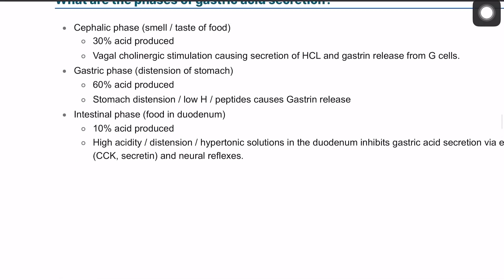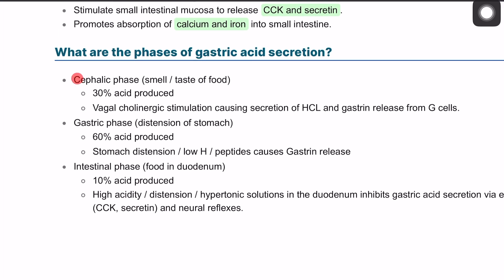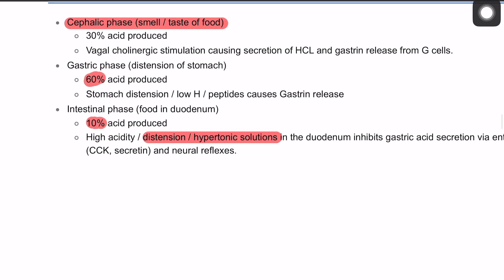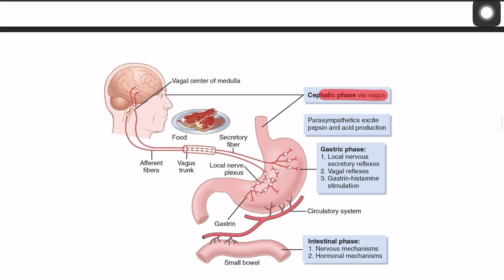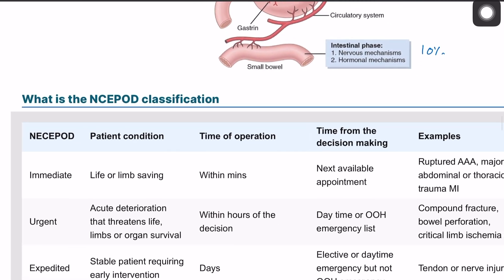There are three phases of gastric acid production. The cephalic phase occurs when you smell or taste food — impulses travel via the vagus nerve to stimulate HCl release, accounting for 30% of production. The gastric phase accounts for 60% of production, triggered by stomach distension or low hydrogen levels. The intestinal phase accounts for 10% of production, driven by high acidity, distension, and hypertonic solution in the duodenum.